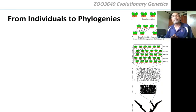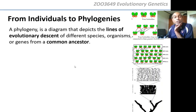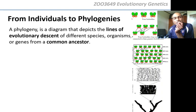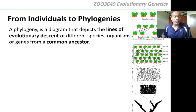A phylogeny, or a tree, basically shows the evolutionary relationships between different species. A phylogeny is basically a diagram — a tree — and what is it showing you? It shows you lines of evolutionary descent of different species, different organisms, or even different genes, from a common ancestor.